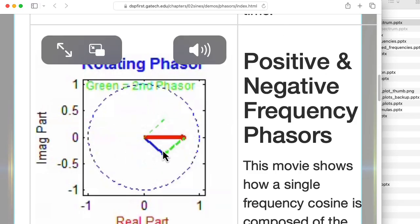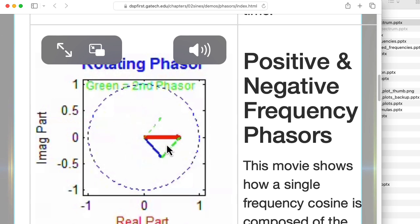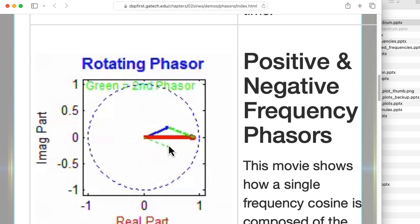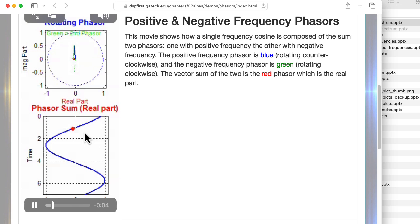The DSP-first website has this nice movie illustrating this idea. The blue vector corresponds to the e to the j omega t term, and the green dashed line that you see coming out of the origin corresponds to the e to the minus j omega t term. And you can see this offset green vector, as you might see in a head-to-tail diagram in physics. You can see how the imaginary parts cancel out, and the real parts add together to give you this red line that's sweeping back and forth. And if we then sweep time along a vertical axis, you can see this red line copy down here and tracing out a cosine wave.